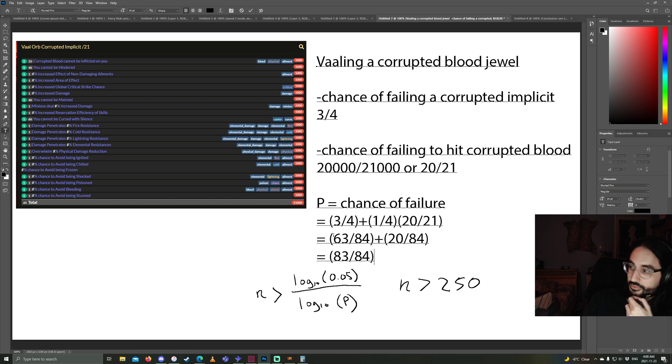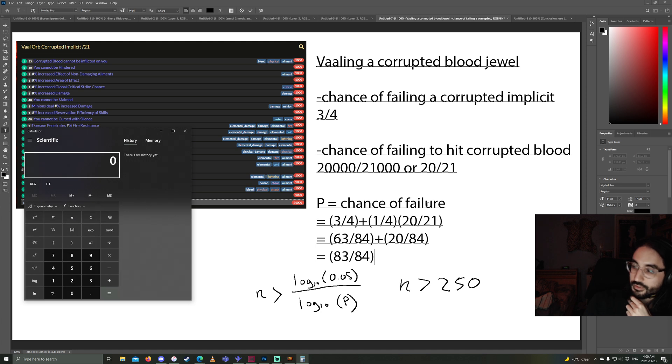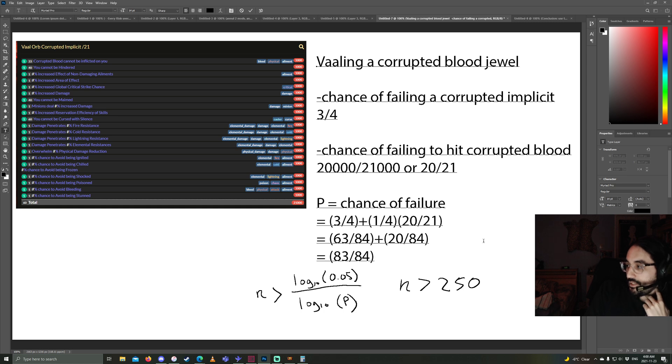So, what this means is, on average, when you slam 84 times, you will hit Corrupting Blood once. But let's calculate the confidence to be very confident that I will hit it at least once. So, 0.05 log divided by bracket 83 out of 84 log. That's 250.1. That means, if you want to have a very high likelihood of at least getting one Corrupting Blood Jewel, you might need to spend, at most, 250 vaal orbs. So, that's the insight from this.